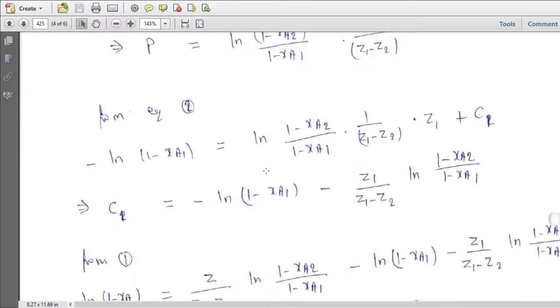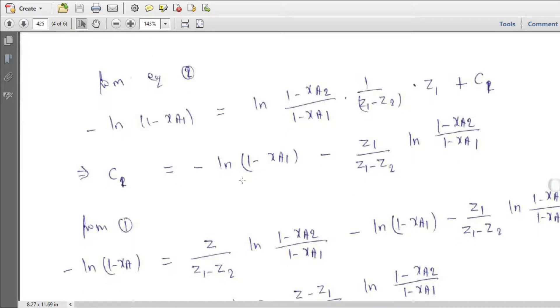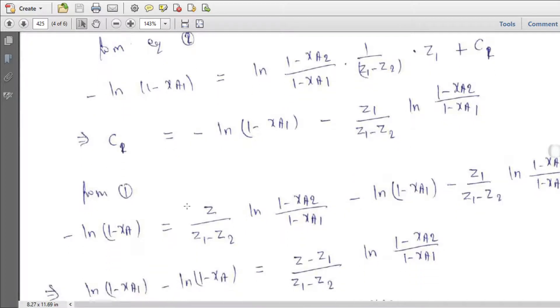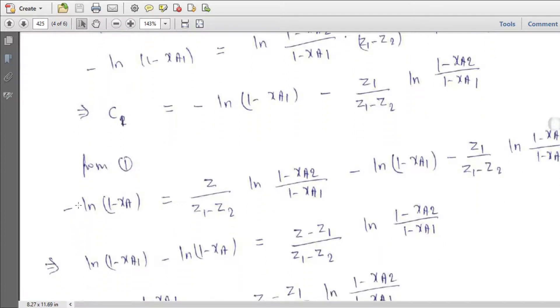This C1 constant. So the C1 comes out to be minus ln 1 minus XA1 minus Z1 upon Z1 minus Z2 times ln 1 minus XA2 upon 1 minus XA1. Now we can substitute all these value of constant 1 in equation 1 here. So if this is equation 1 you have substituted here, so this is your value of constant C1. This is your actually your P. This one is totally P here.